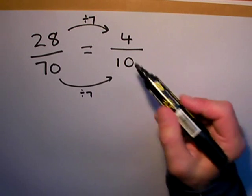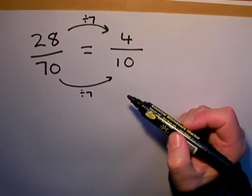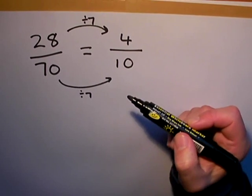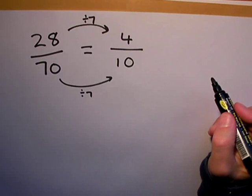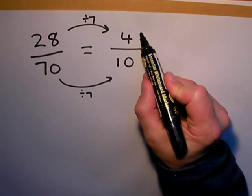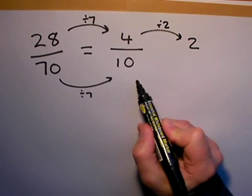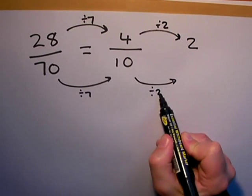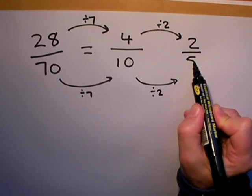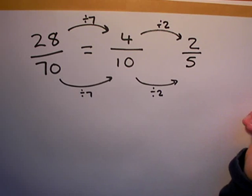Now this fraction isn't in its simplest term yet because I can actually see that I can divide ten and four by another number. They're both even numbers, so I can divide them both by two. So if I divide by two, I get two. I divide by two for the bottom number, I get five. Now I've got the simplest fraction, which...